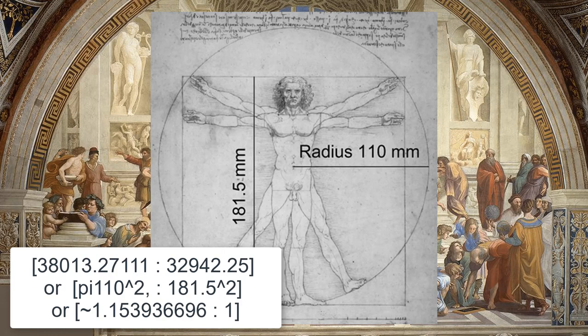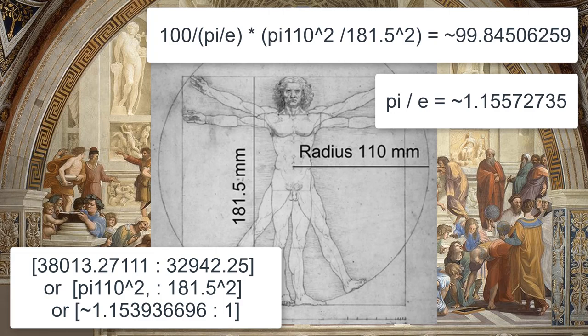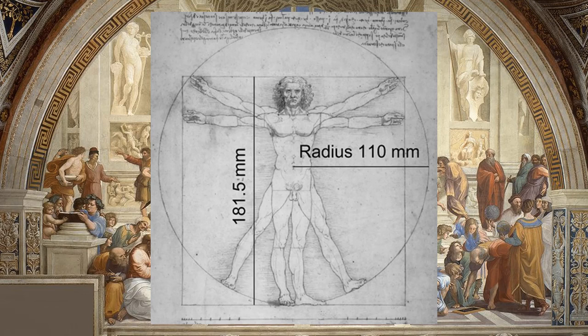This is 99.845 percent identical to the ratio of the constants pi to e, which is 1.156. This means that if we drew a circle with a radius of one — giving us an area of pi — we could approximate da Vinci's square with over 99 percent accuracy by creating one with an area equal to e.